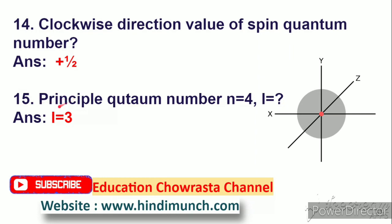Next question: principal quantum number n is equal to 4, L is equal to dash. n is equal to 4 ayathe L entha? Answer: L is equal to 3.